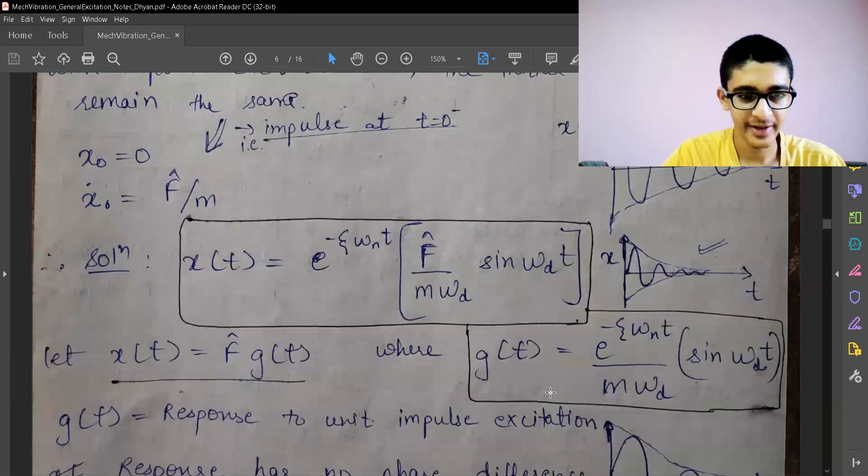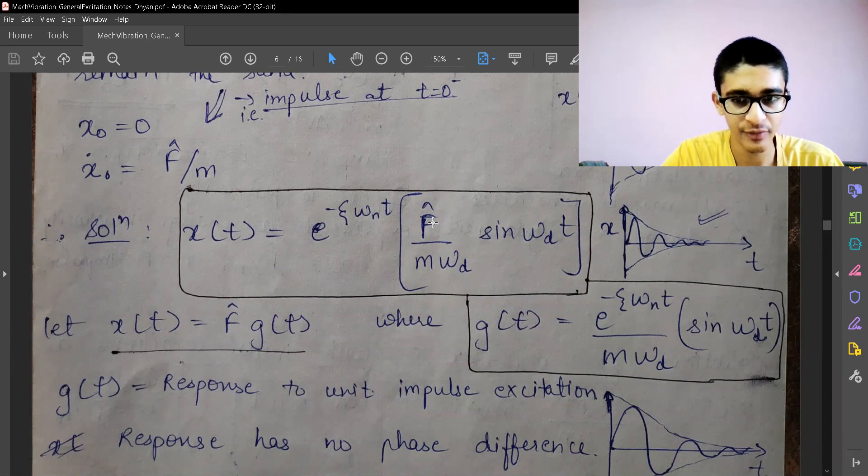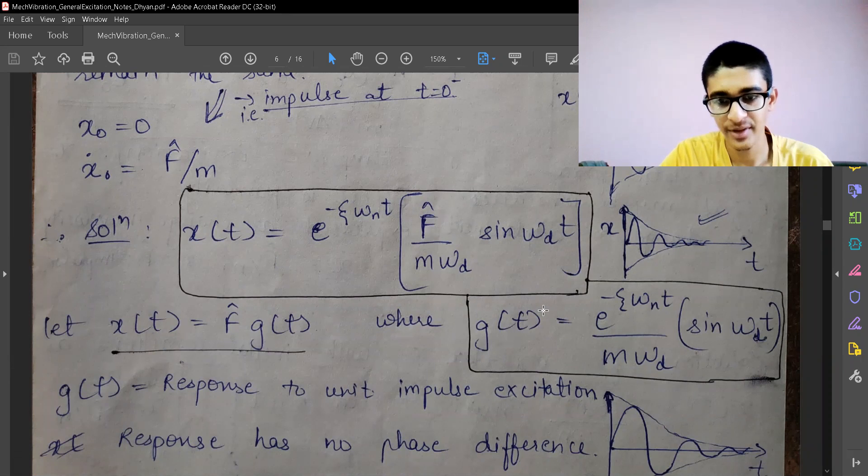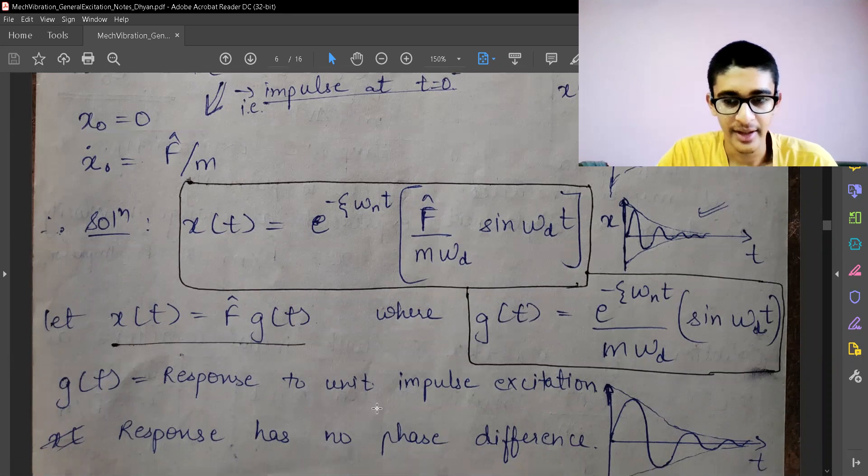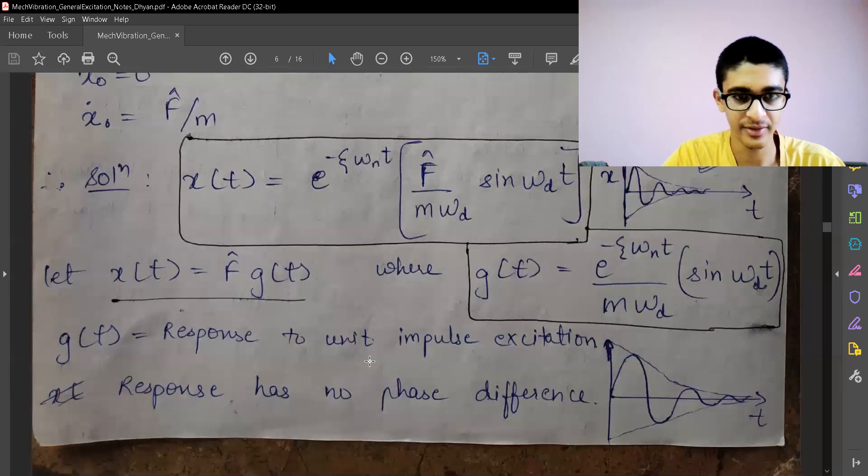Again, as we defined earlier, we can define a response to unit impulse function by putting f cap equals 1. We have got that unit response to unit impulse function equal to this where the f cap value is 1. Again we can see that the response has no phase difference. As and when the impulse was applied, we have the response to it with phase difference equal to 0.